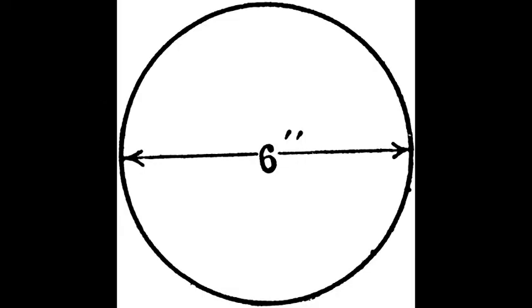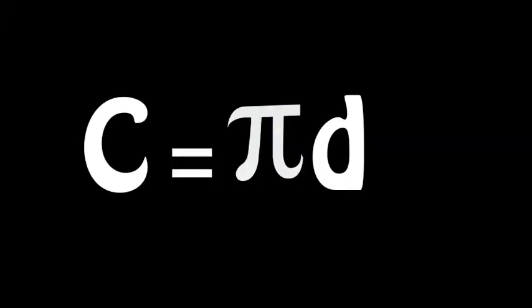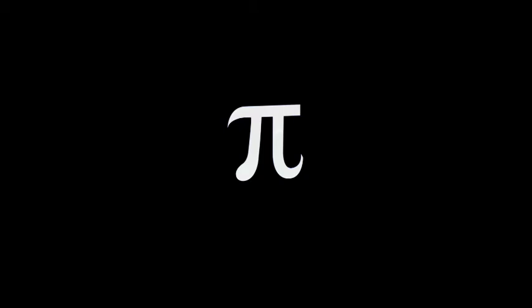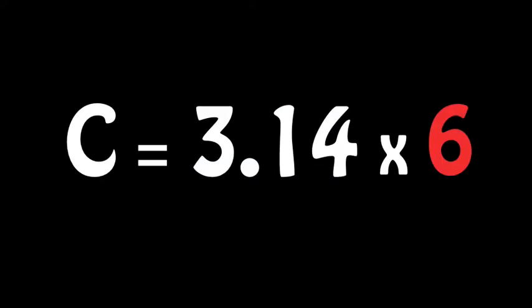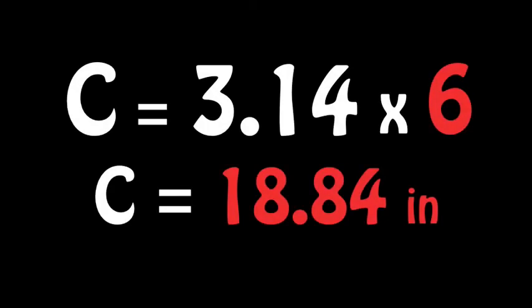So what is the circumference of a circle with a diameter of 6 inches? Using our formula to find circumference, we'll replace the D, which stands for diameter, with 6. Then we'll replace our symbol of PI with its value of 3.14. When we do the math and multiply them together, our answer is 18.84 inches.